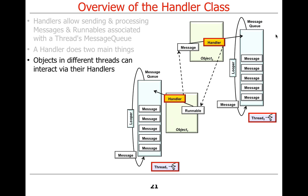In Android, most of the time you use this mechanism for background threads to communicate to the user interface thread — 99 times out of 100, that's what you do. There's no reason you can't have arbitrary threads sending messages back and forth to each other. You can have threads with handlers passing messages and runnables to each other so they get processed in the appropriate place.